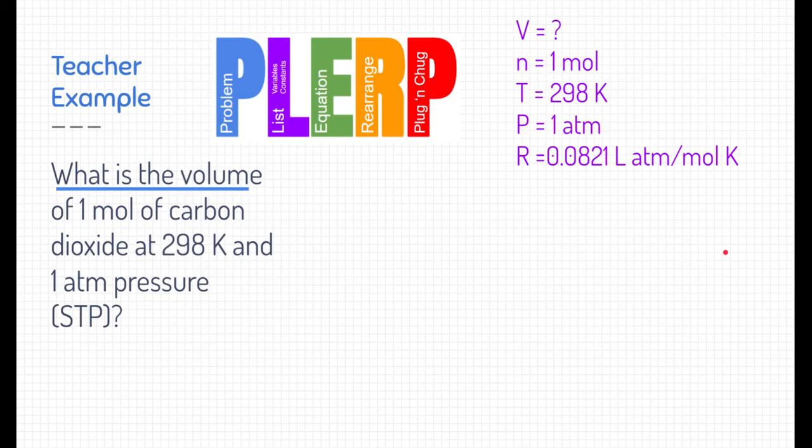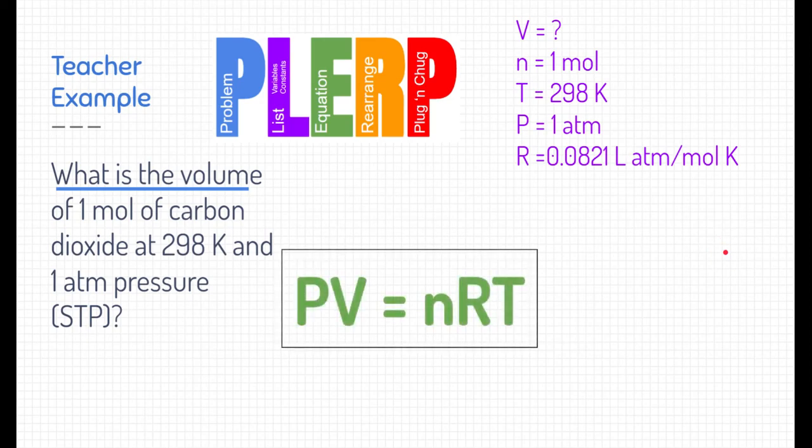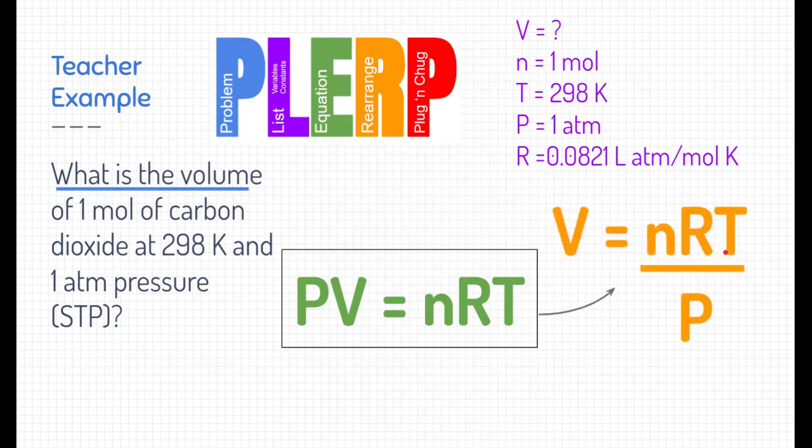All right. So which equation are we going to use? Well, we have lots of different chemistry equations, but the one we're specifically talking about is PV equals nRT. But this isn't the format we wanted in. We need to solve for something specific. Specifically, we're solving for volume. So what I'm going to do is I'm going to rearrange this equation to solve just for volume before I plug any of my numbers in to make it a little bit easier to deal with.